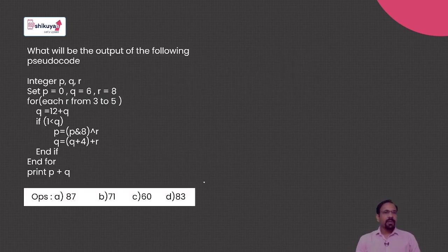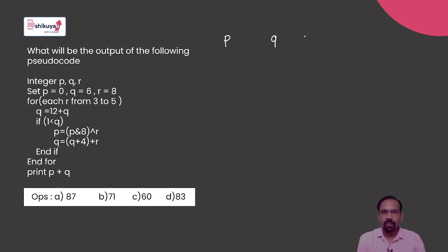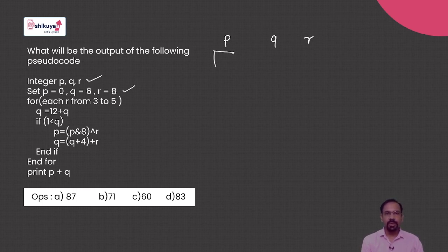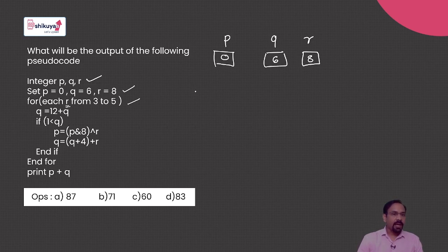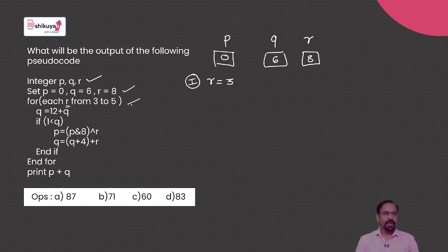Here is the first pseudocode. The first line is integer pqr — three integer variables: p, q, and r. In the next line, the initial value of p is 0, q is 6, and r is 8. Then a for loop is written; inside this for loop, the value of variable r goes from 3 to 5. This for loop will be executed three times. We will consider the first case where the value of r is equal to 3.